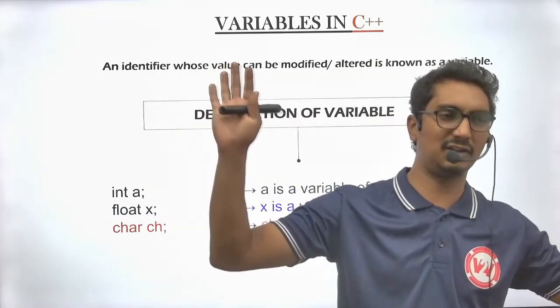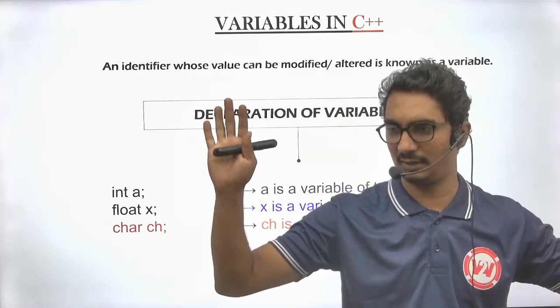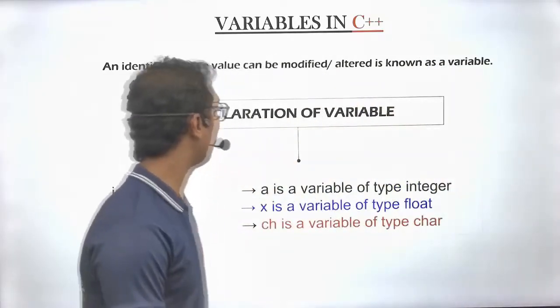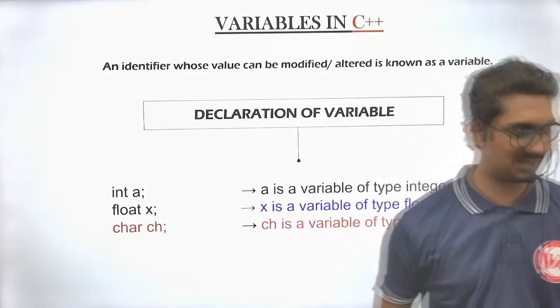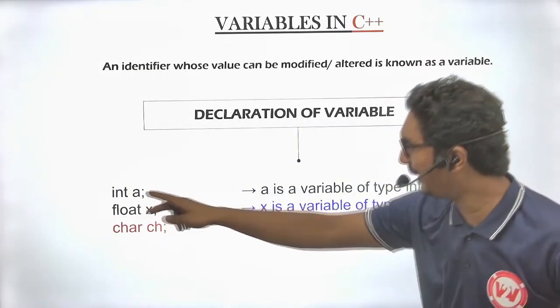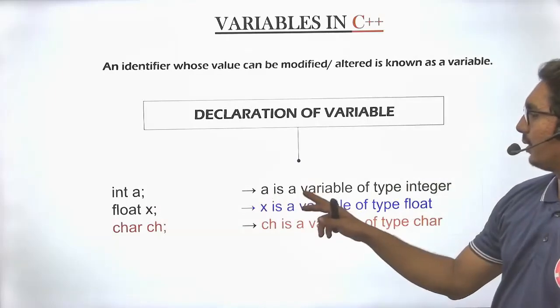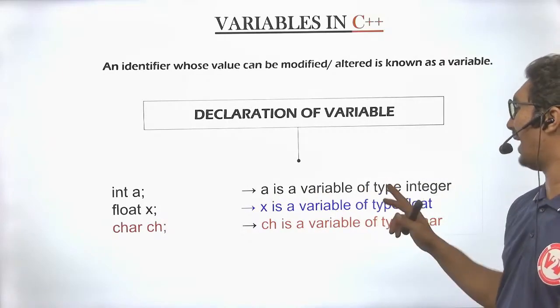Variable has unique definitions. Declaration of Variable. How do we declare the variable? Int a. A is a variable of type integer.